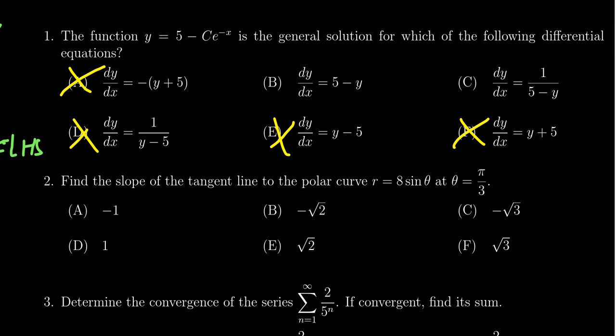If we tried b, you take 5 minus 5 minus c e to the negative x. Bob's your uncle. You're going to get 5 minus 5. They cancel. And you're going to get negative negative c. So you get c e to the negative x. We see that the correct choice would be b right here.